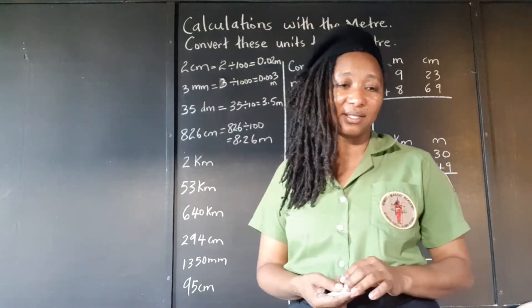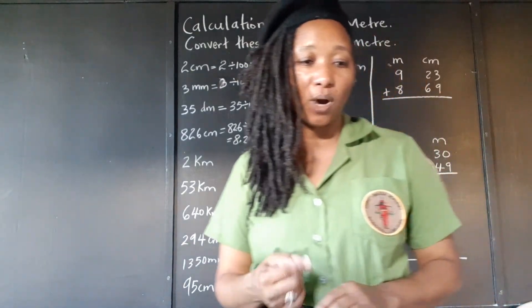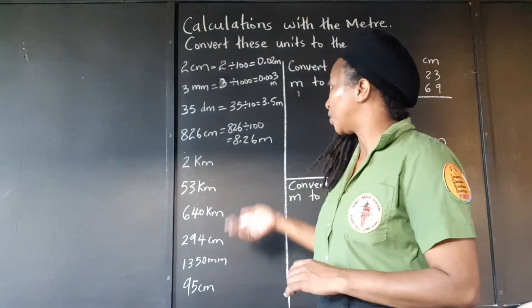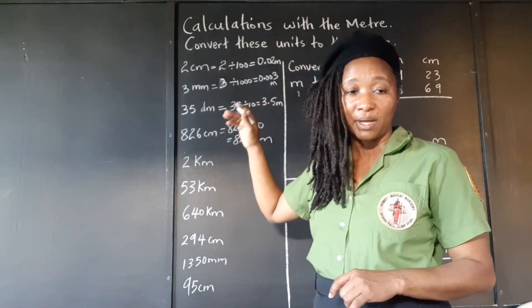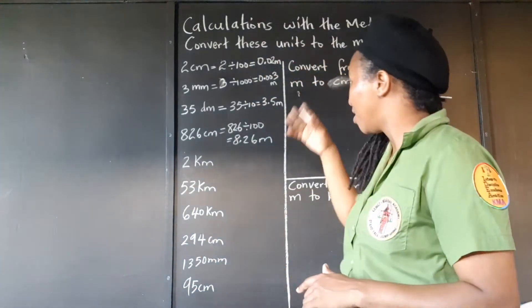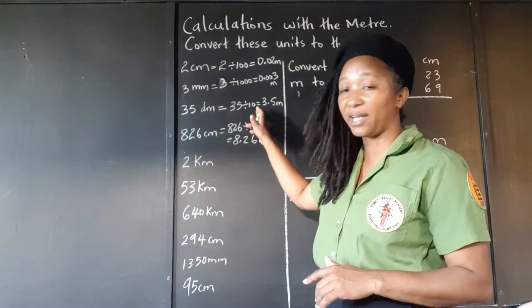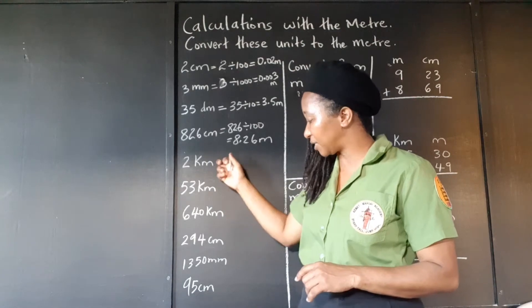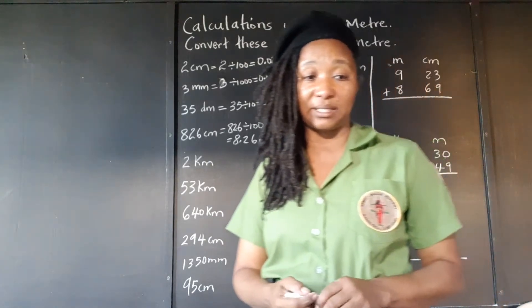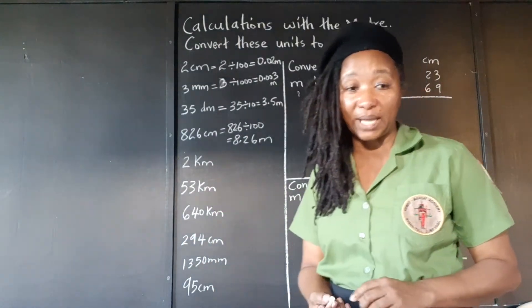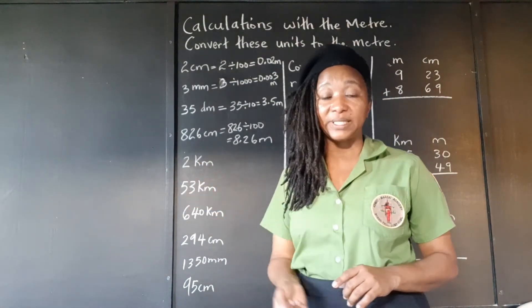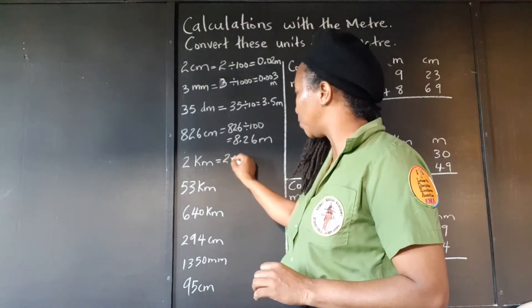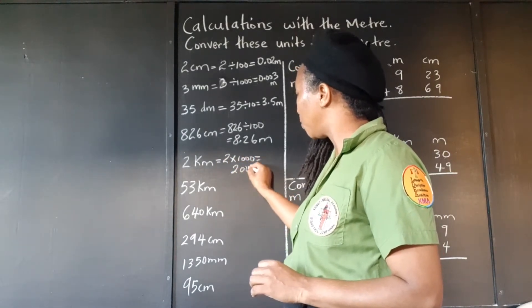10 decimeters make 1 meter. The prefix 'deci' means 1/10. When changing from the smaller unit to the bigger, we divide — so we divide 35 by 10, which gives 3.5. Now we're changing from the bigger unit to the smaller: kilometers to meters. Bigger to smaller, we multiply. The prefix 'kilo' means 1,000, so 2 kilometers to meters is 2 times 1,000, which gives 2,000 meters.